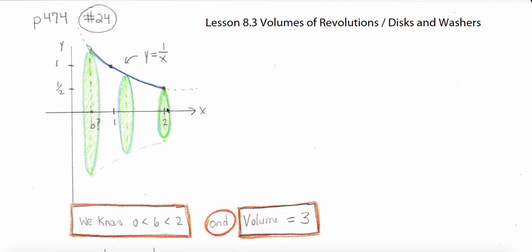Here's what I know. I know that b is between 0 and 2 and that the volume has to be 3. Each cross-section is a circle, and the area of a circle is pi r squared. So the radius is nothing more than the distance from the x-axis to the function, which is 1 over x.